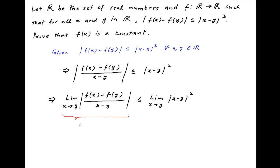The left-hand side is equal to modulus of f dash y, and the right-hand side is equal to 0 because x minus y whole square tends to 0 as x tends to y. This implies that modulus of f dash y is less than or equal to 0.